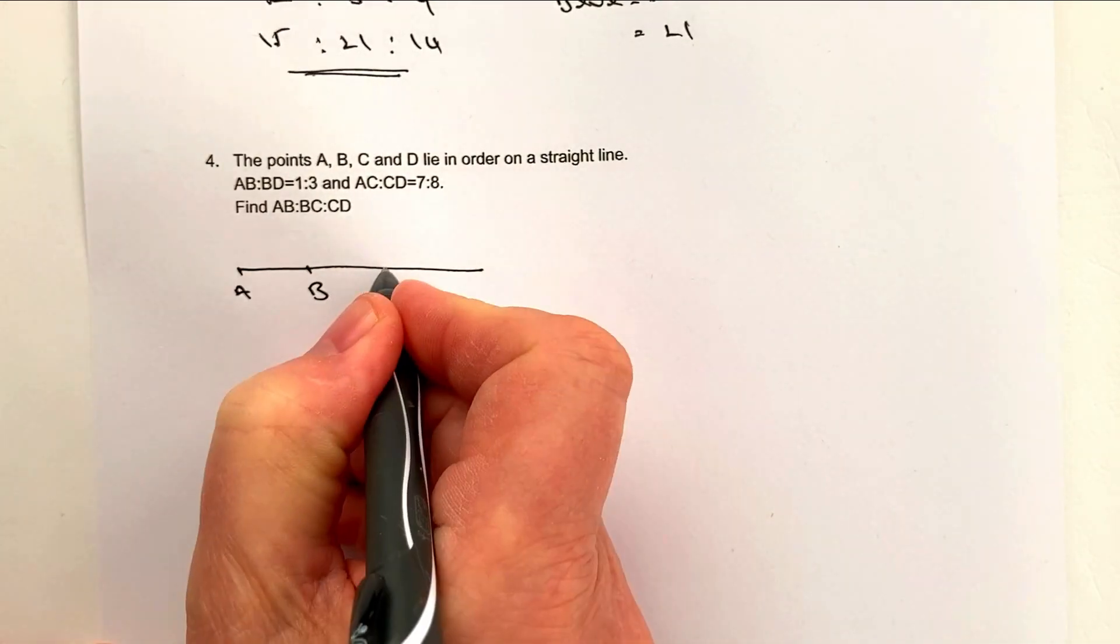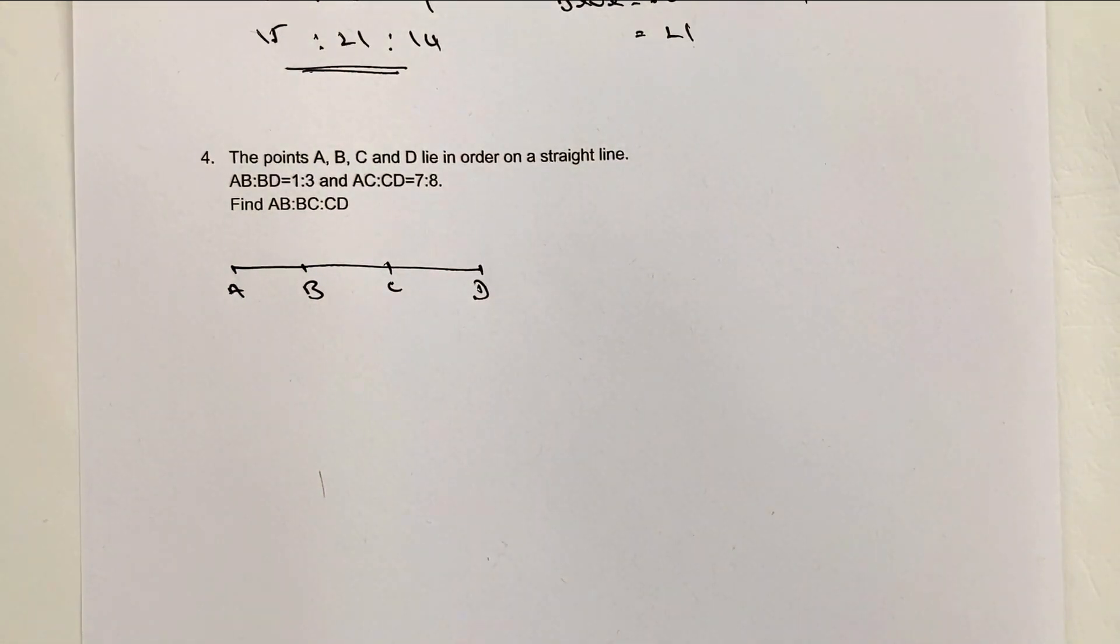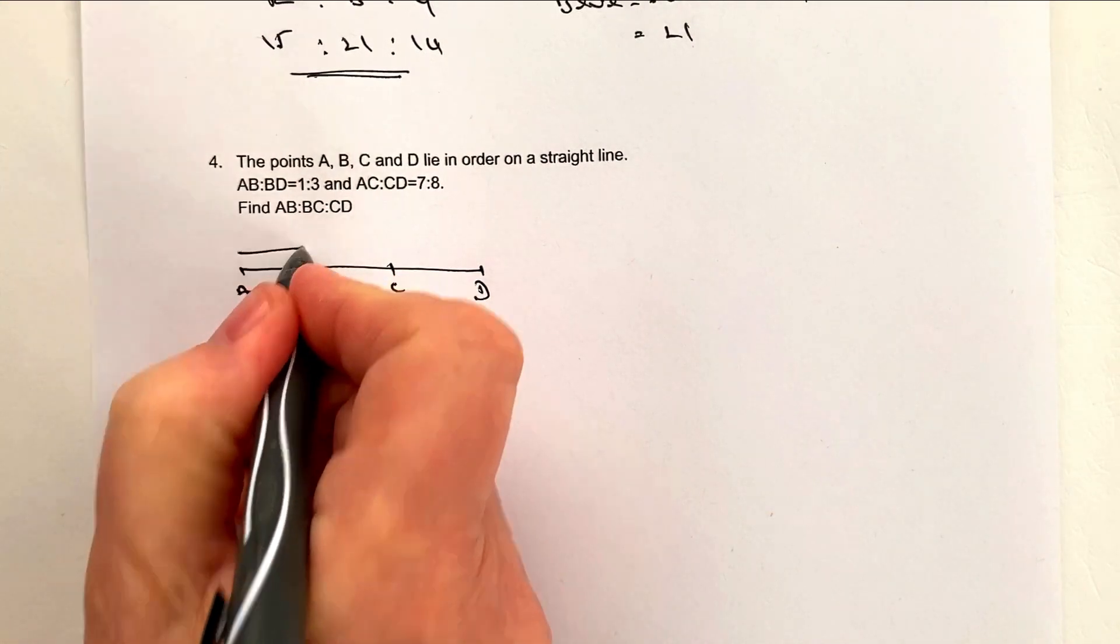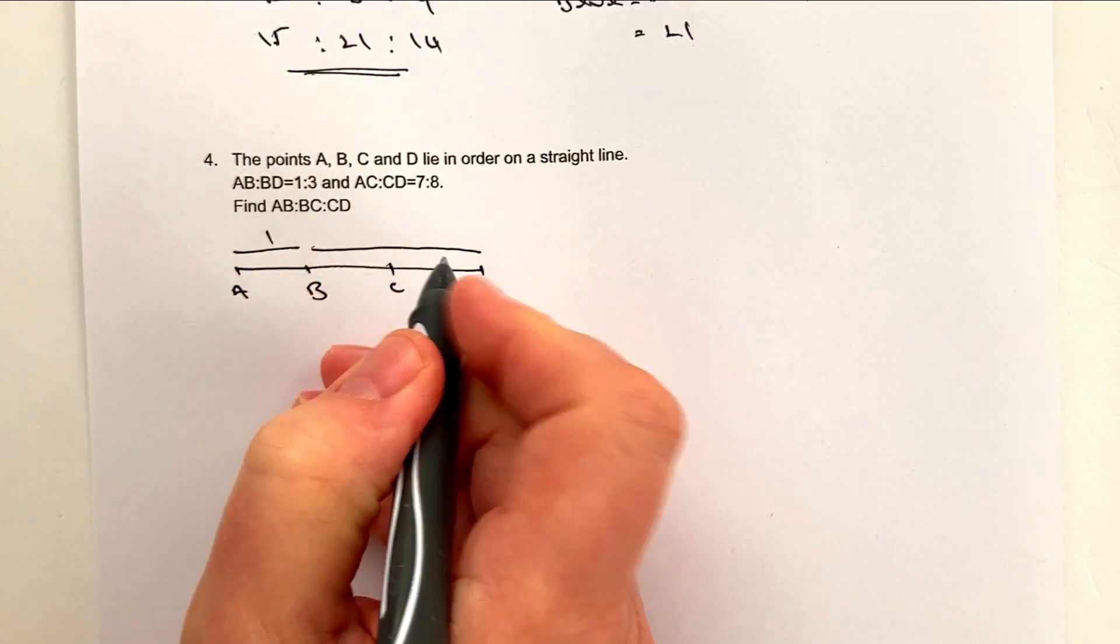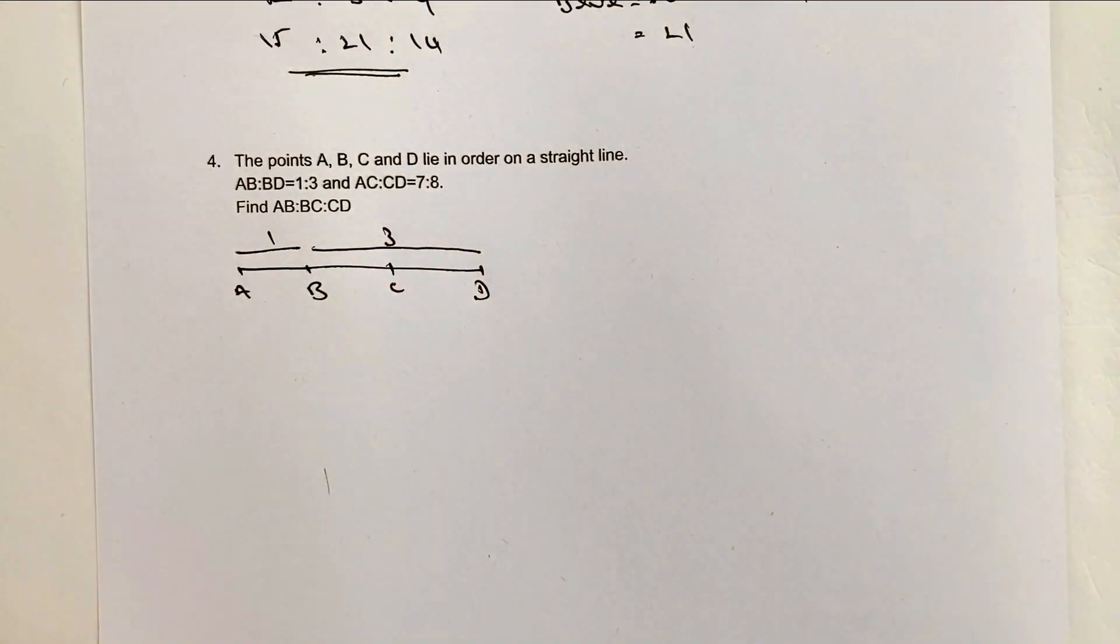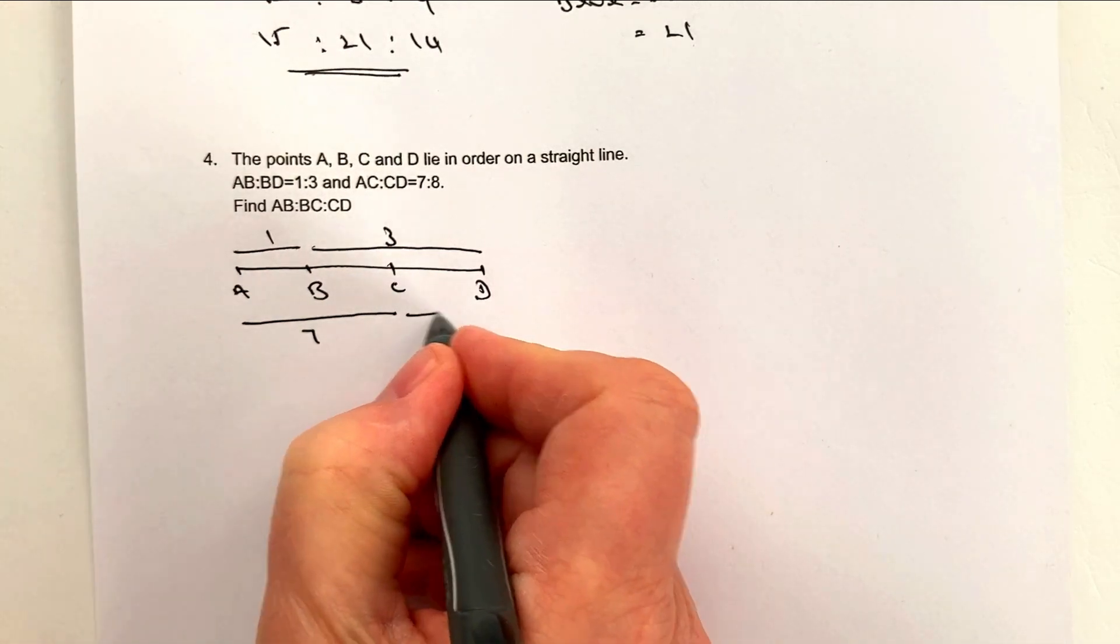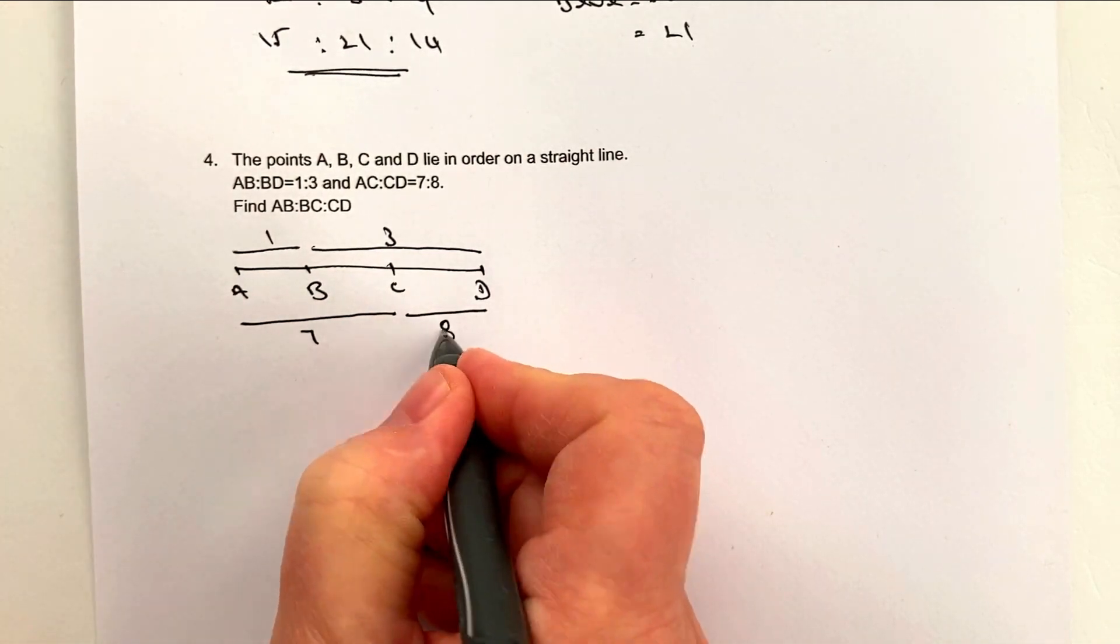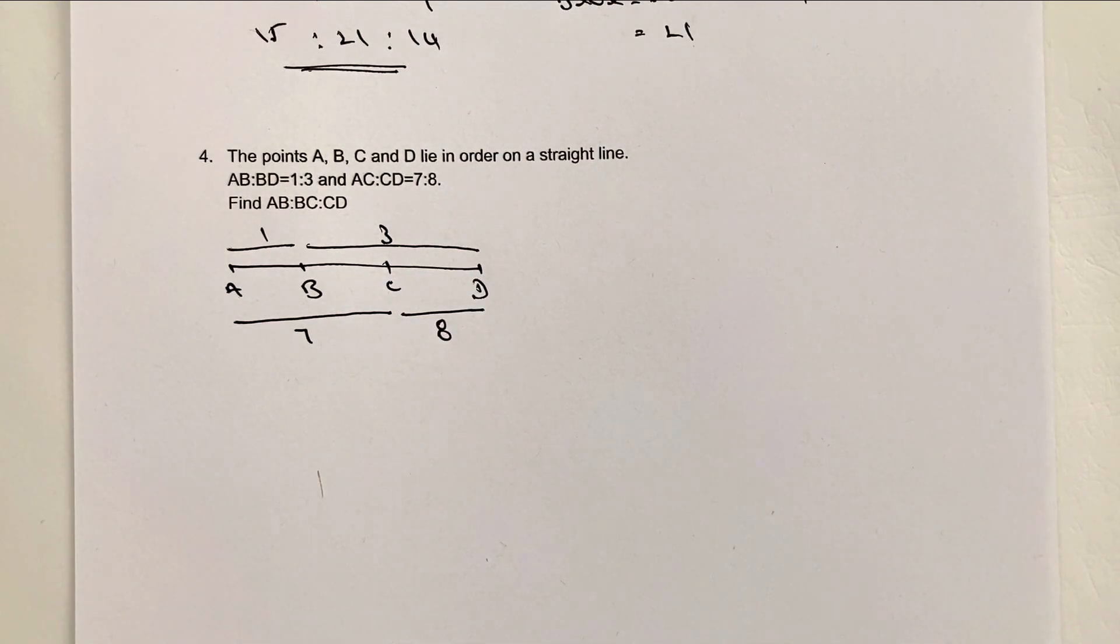So what we've got then is a straight line with A, B, C, and D. Now A to B it says is going to be 1 and B to D is going to be 3. Then it says A to C is going to be 7 and C to D is going to be 8.